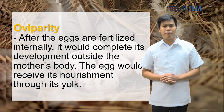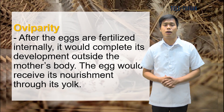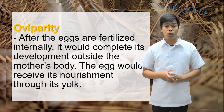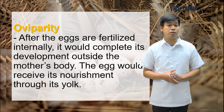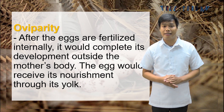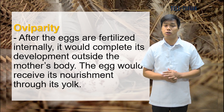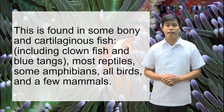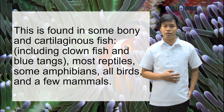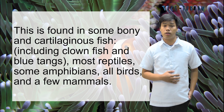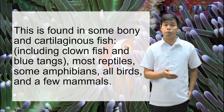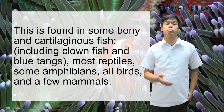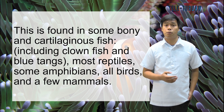What is oviparity? In oviparity, after the eggs are fertilized internally, they complete their development outside the mother's body. The egg receives its nourishment through its yolk. This is found in some cartilaginous fish including clanfish and bullsharks, most reptiles, amphibians, all birds, and monotreme mammals.